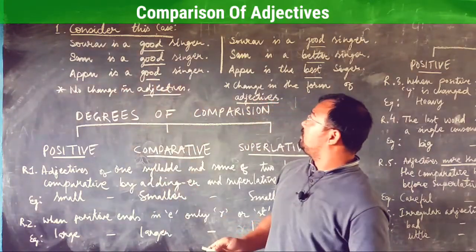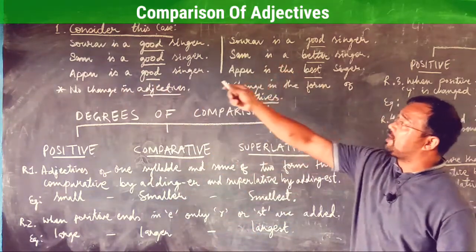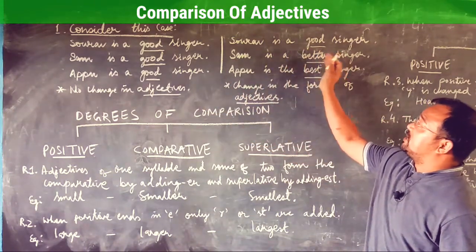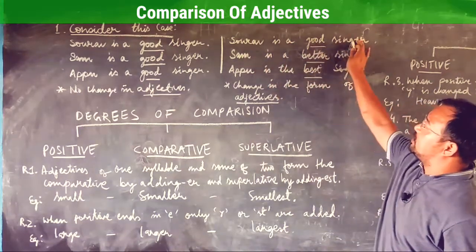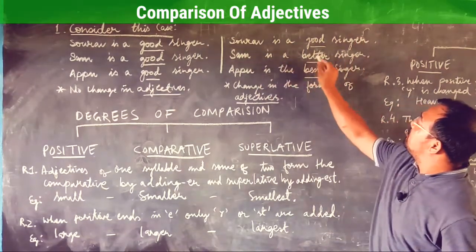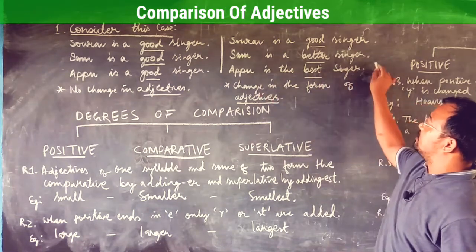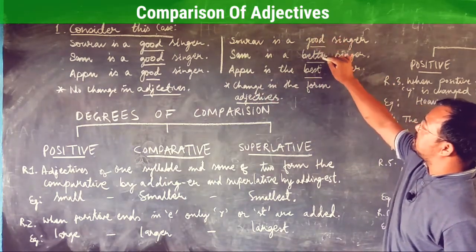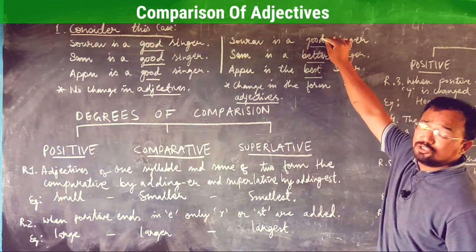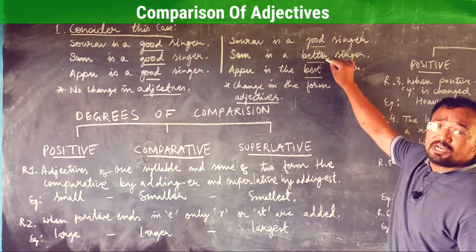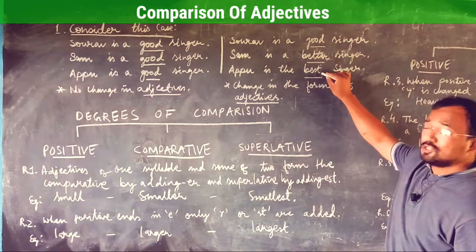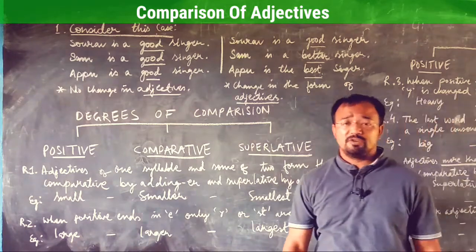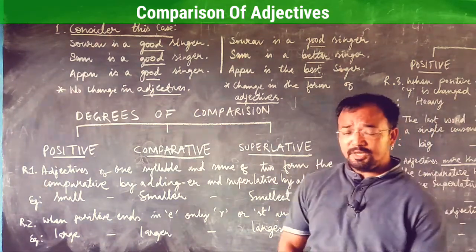Now the same kind of sentence but the adjective formation is changed. Saurabh is a good singer, Sam is a better singer, Appu is the best singer. The adjective formation changes: good, better, best. Good is the positive degree, better is the comparative degree, and best is the superlative degree.